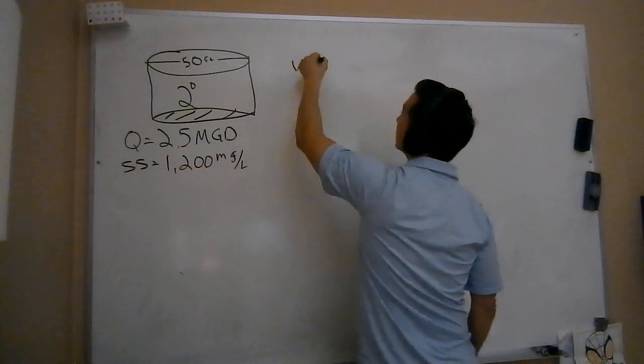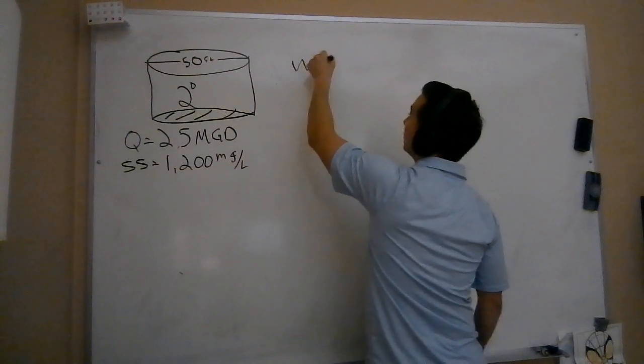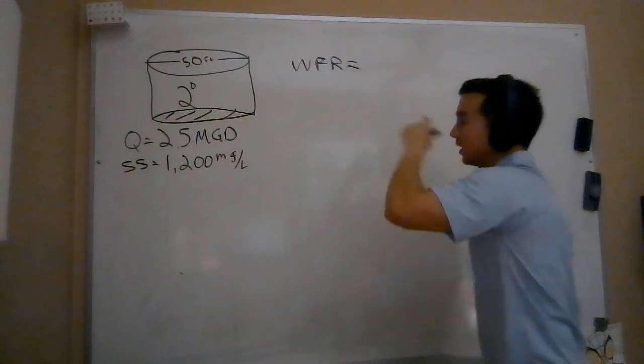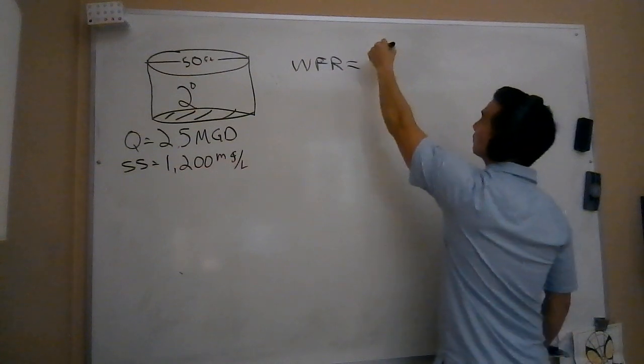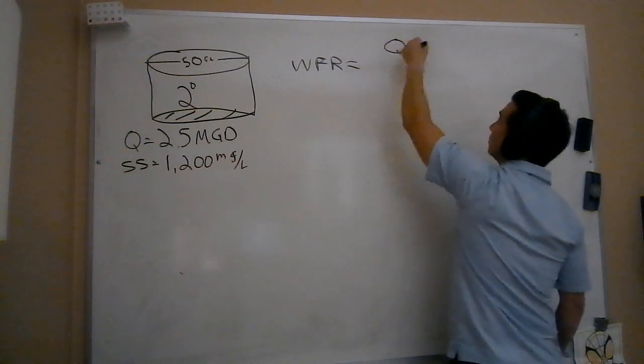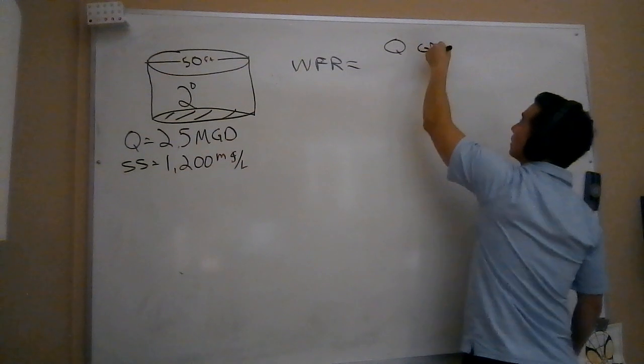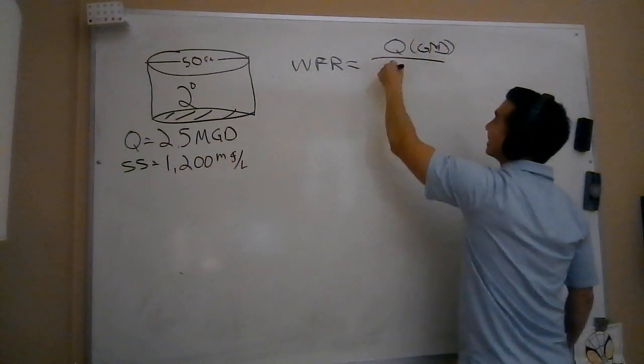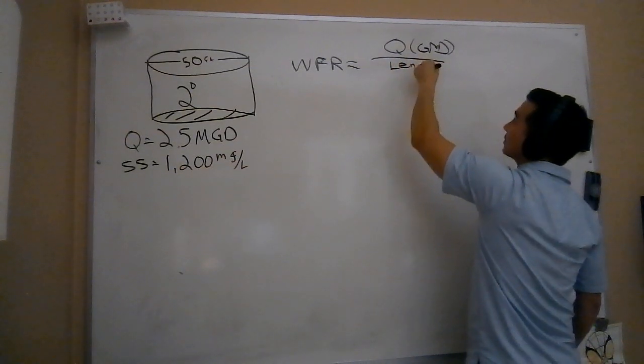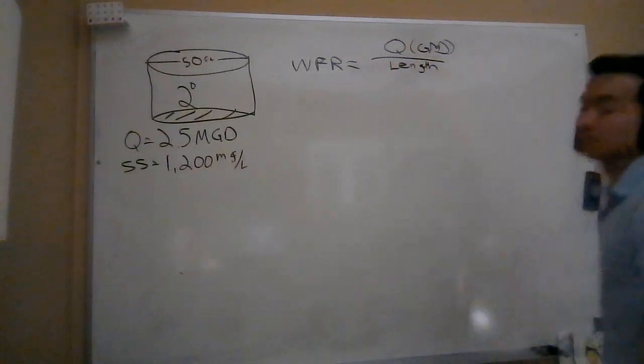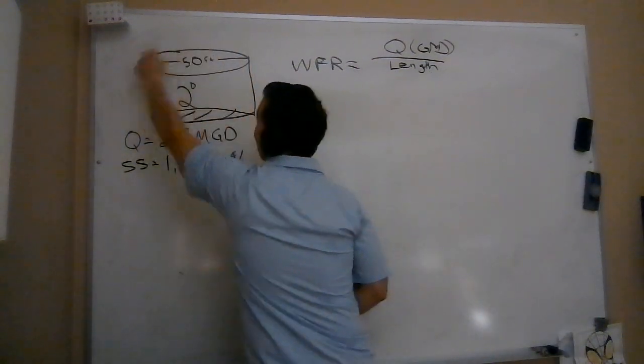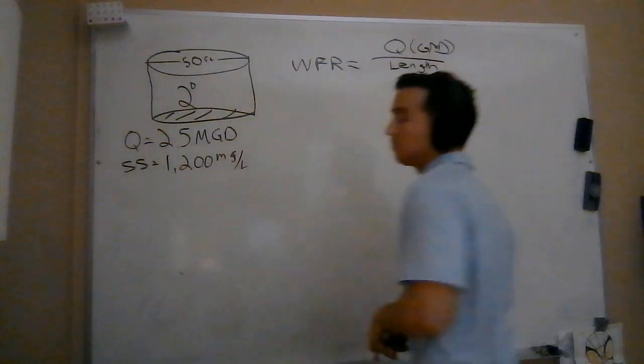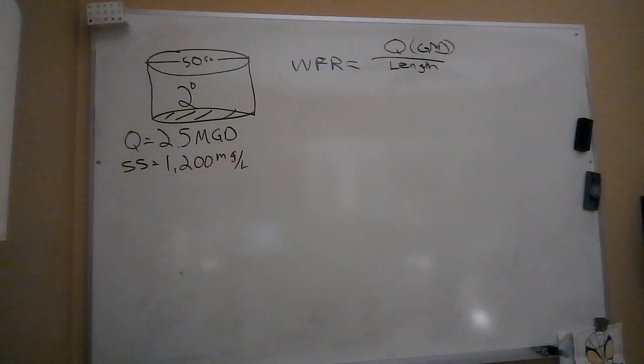We want to calculate our weir overflow rate, which I'm going to abbreviate as WFR. The formula for the weir overflow rate is Q in terms of gallons per day divided by the length of my weir. Notice a big difference between the weir overflow rate and the solids loading rate - we're not dividing by area, we're dividing by the length of the weir. That's going to be a different formula on that first page of our wastewater conversion sheet.